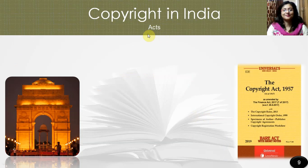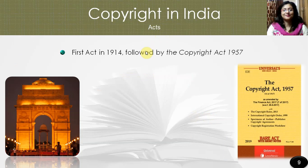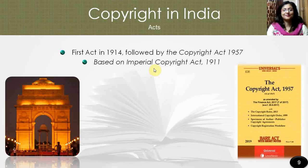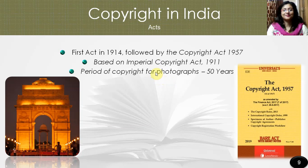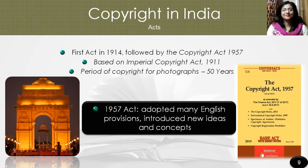Copyright Acts in India: the first Copyright Act in India was made in 1914, followed by the Copyright Act of 1957. The Indian Copyright Act 1914 was based on the Imperial Copyright Act of 1911 passed by the Parliament of the United Kingdom, but was slightly modified in terms of its application to Indian law. According to this act, the period of copyright for photographs was 50 years from the time it was first published. In 1957, the Copyright Act adopted many English provisions and introduced many new ideas and concepts which we are going to study in the next few slides.